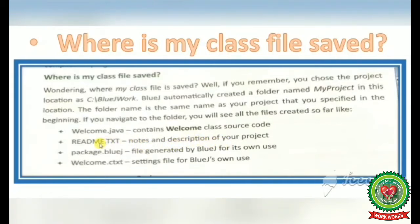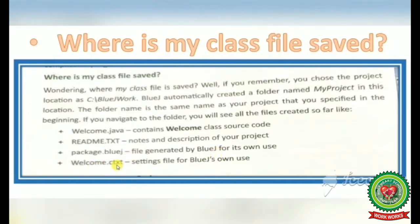The readme file contains information about the author who created the project, when the project was modified, and the purpose of the project. Number 3 is package.bluej, which is a file generated by BlueJ for its own use. Number 4 is welcome.ctxt, a text file that is a settings file for BlueJ.